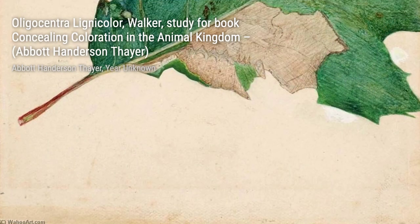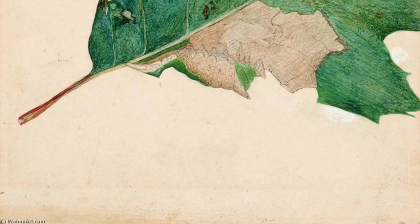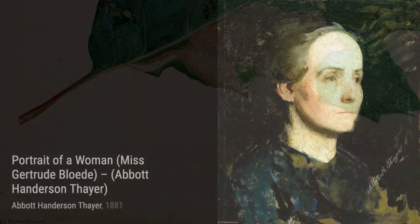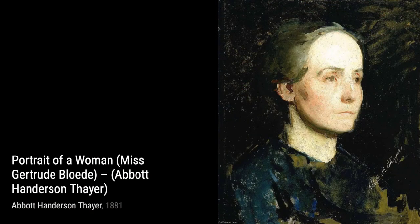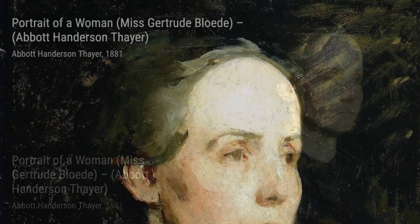Moving on, we have The Sky Simulated by Red Flamingos, a study for the book Concealing Coloration in the Animal Kingdom. Thayer's exploration of color and its role in nature is evident in this stunning artwork.